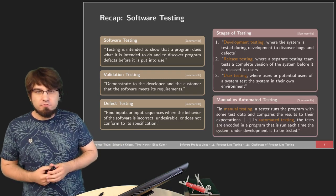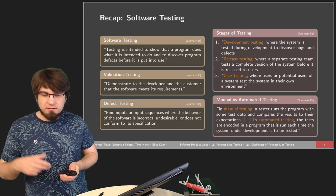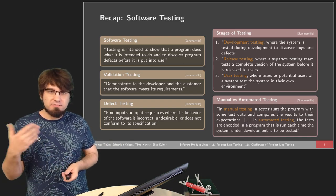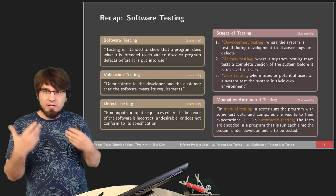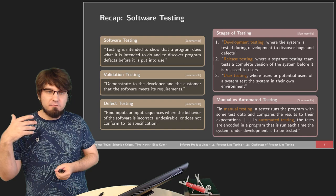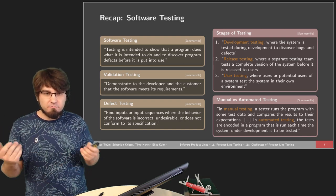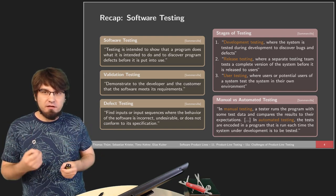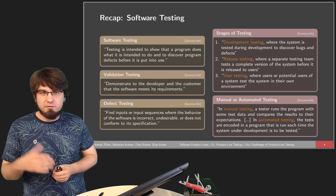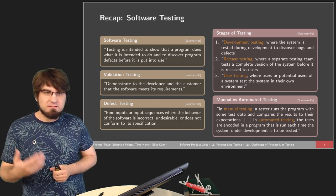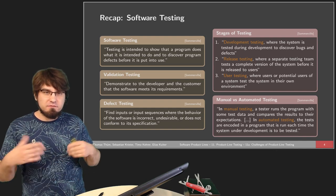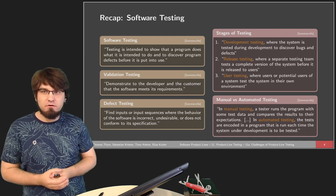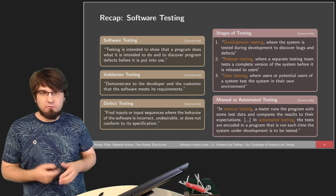We can also differentiate between manual and automated testing. Manual testing means someone gives the system input and observes the output. In many circumstances we can automate this process, which is really preferable — automated testing allows many more test cases to run in the same time, increasing the detection potential for potential failures.